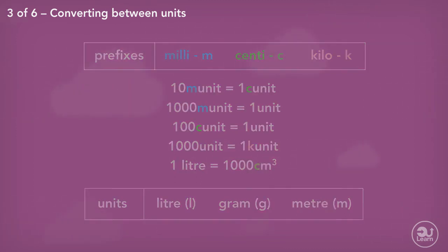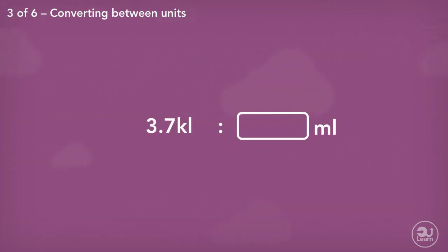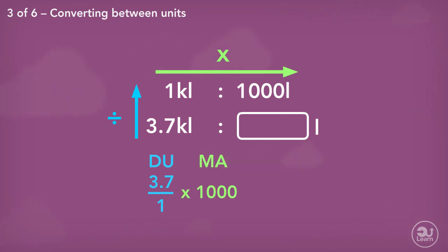Another example. Convert 3.7 kilolitres to millilitres. The knee-jerk reaction would be to try and find the relationship between millilitres and kilolitres. Just use the ratios we have above. First, let's convert 3.7 kilolitres to litres. 3.7 kilolitres divided by 1 multiplied by 1,000 gives us 3,700 litres.